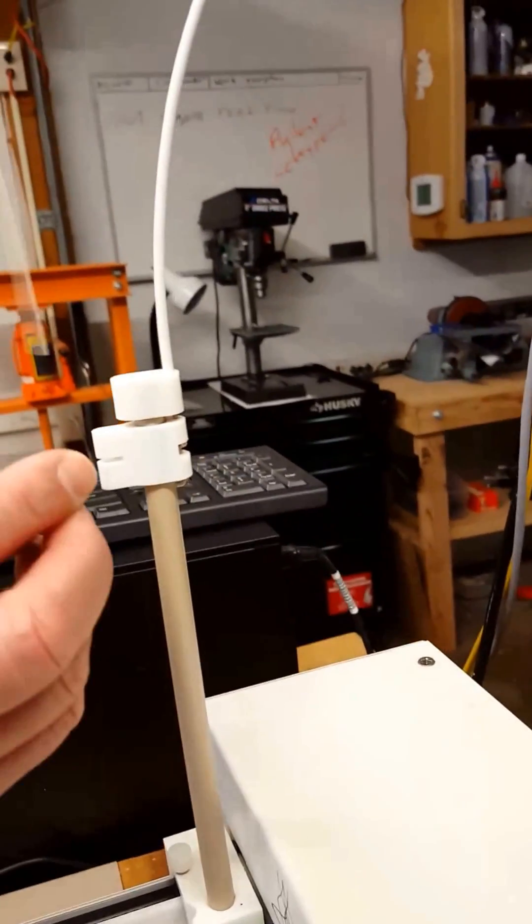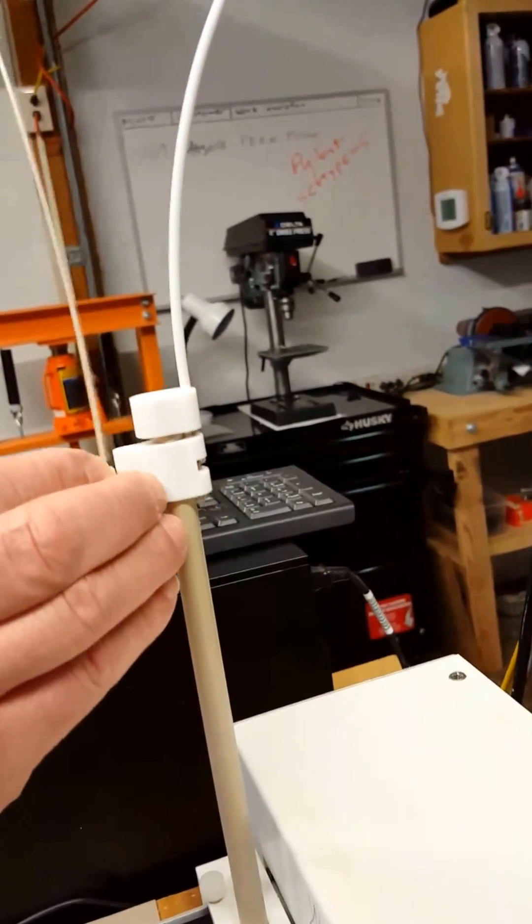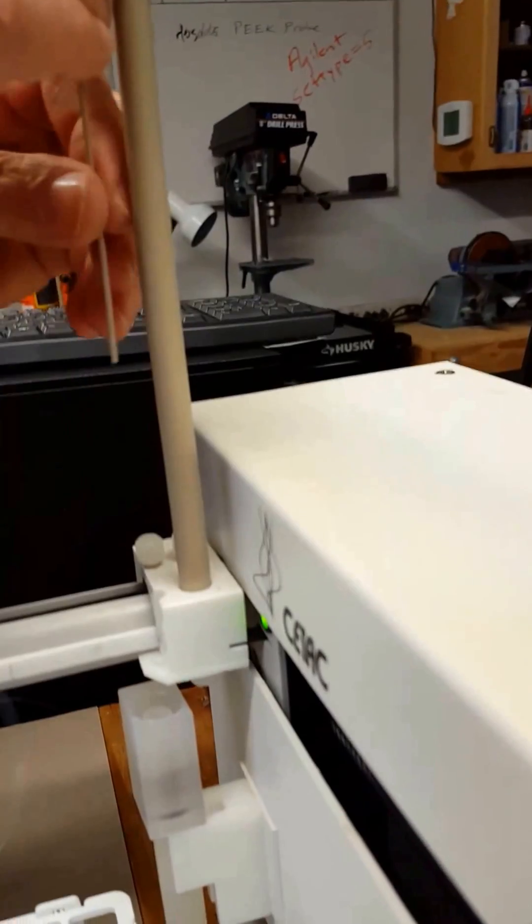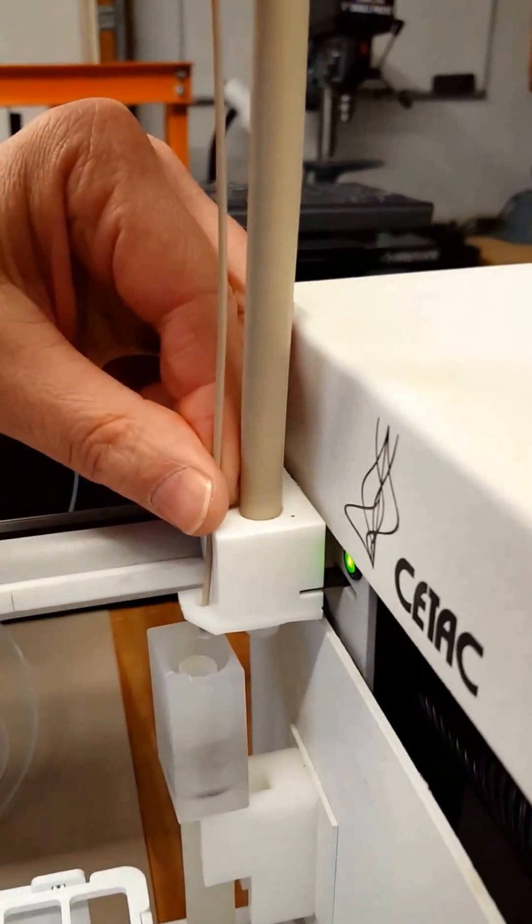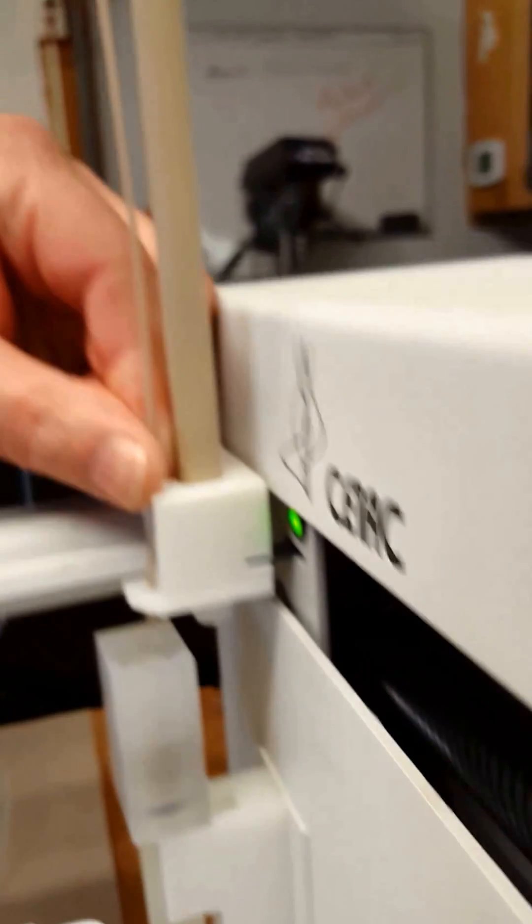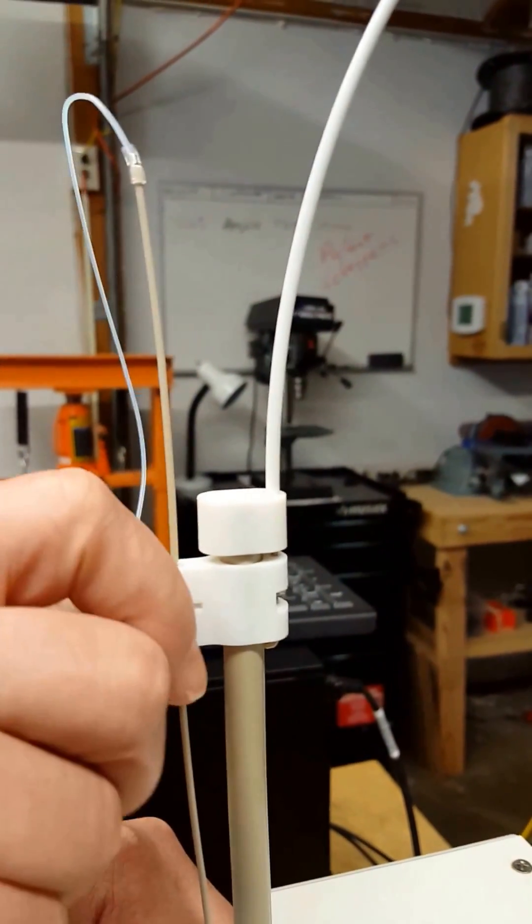Feed the probe through the slot and the specialized nut. It goes down through the hole in the peak probe plate and should be positioned about halfway to the reservoir. Then secure the nut down.